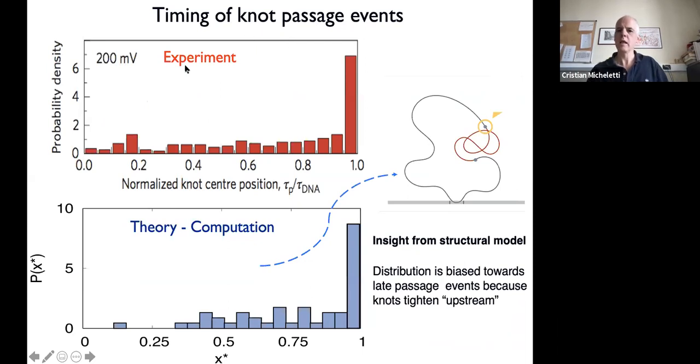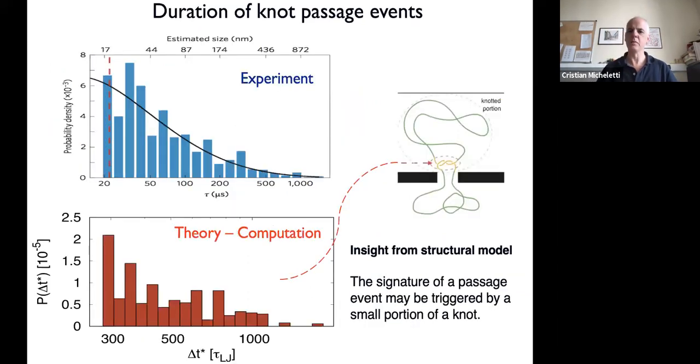Experiment shows a skew towards late passage events. We see the same skew. This is because the propagation of the tension front always tightens the knot before reaching the pore at the essential crossing furthest from the pore entrance. Even if you start with knots randomly distributed on the chain, by tightening it you're pushing it away from the pore effectively.